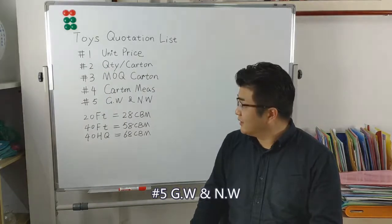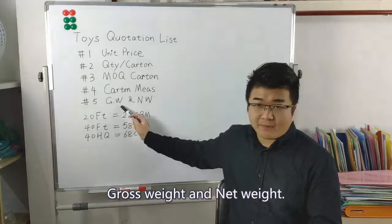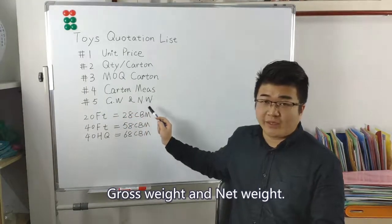The last one is GW and NW. GW means gross weight. NW means net weight.